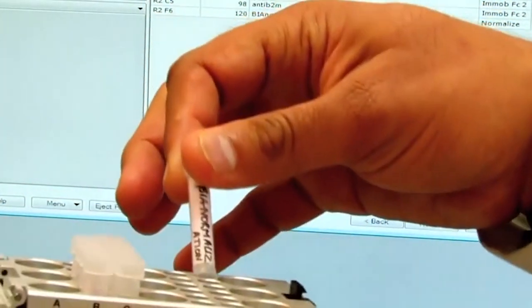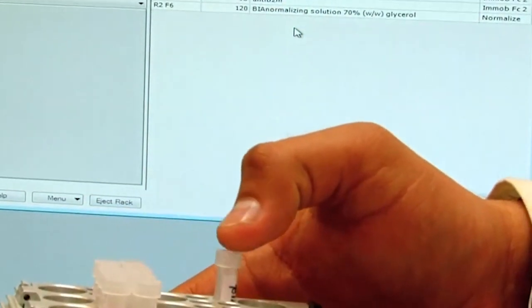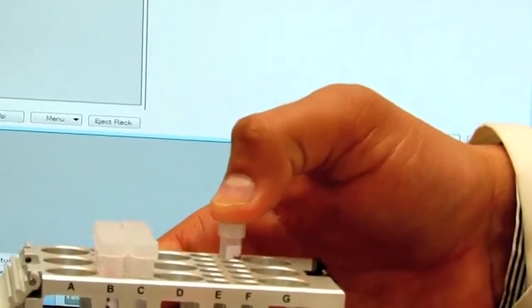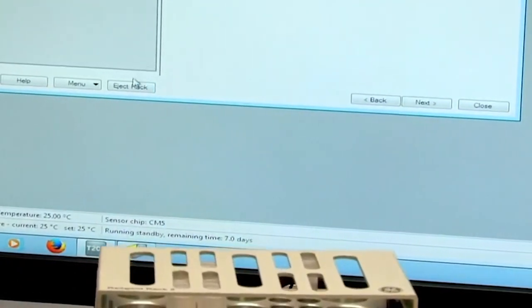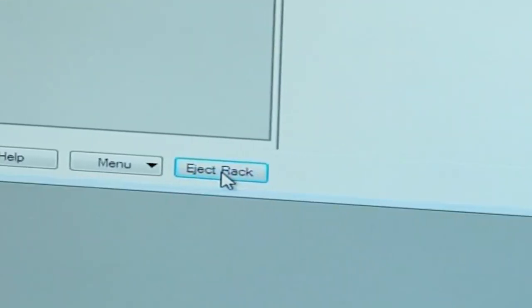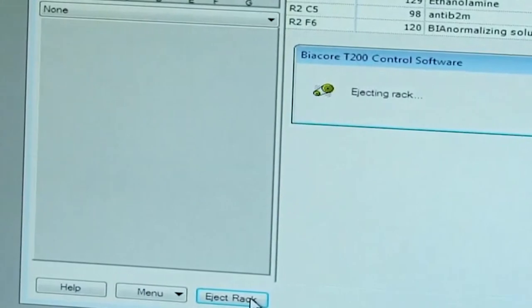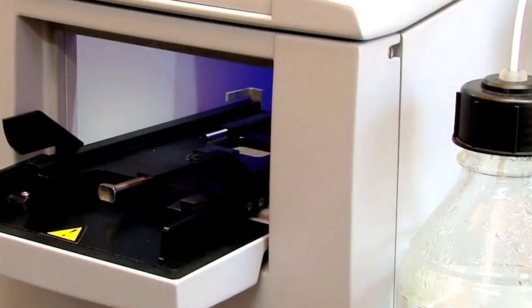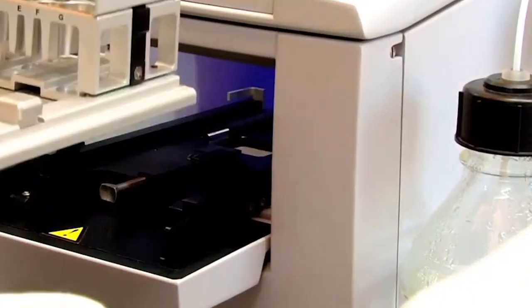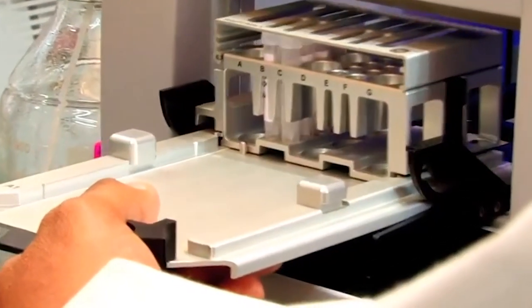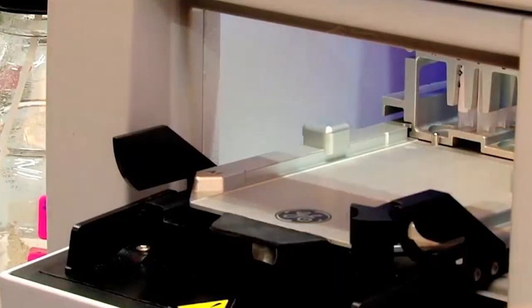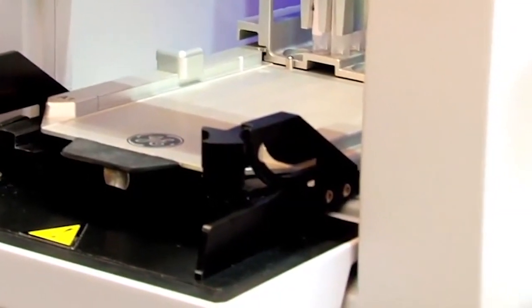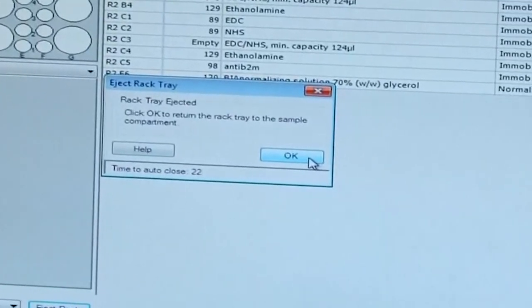We close the door this way and go on the screen here. We eject the rack. We will insert the rack into the sample compartment this way and we need to lock it inside and then go on the screen. Close the compartment.